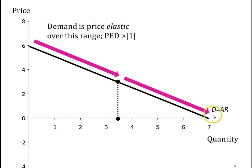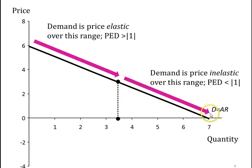In the second half — the lower range of the demand curve — when price falls, we're in the range where marginal revenue is negative. We're taking away from total revenue. When price falls, total revenue falls. In that case, demand is relatively price inelastic. So the top half of the demand curve is price elastic, and the lower half is price inelastic.